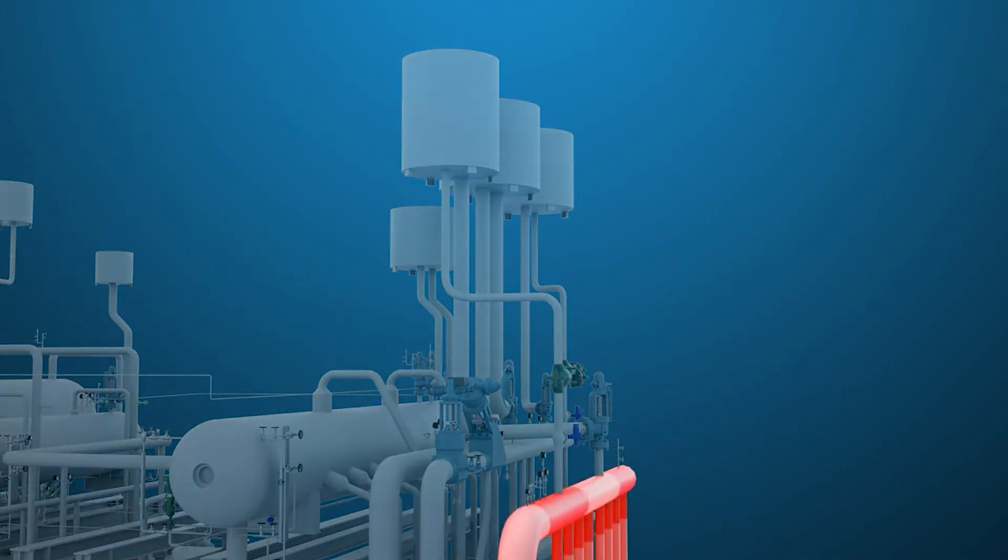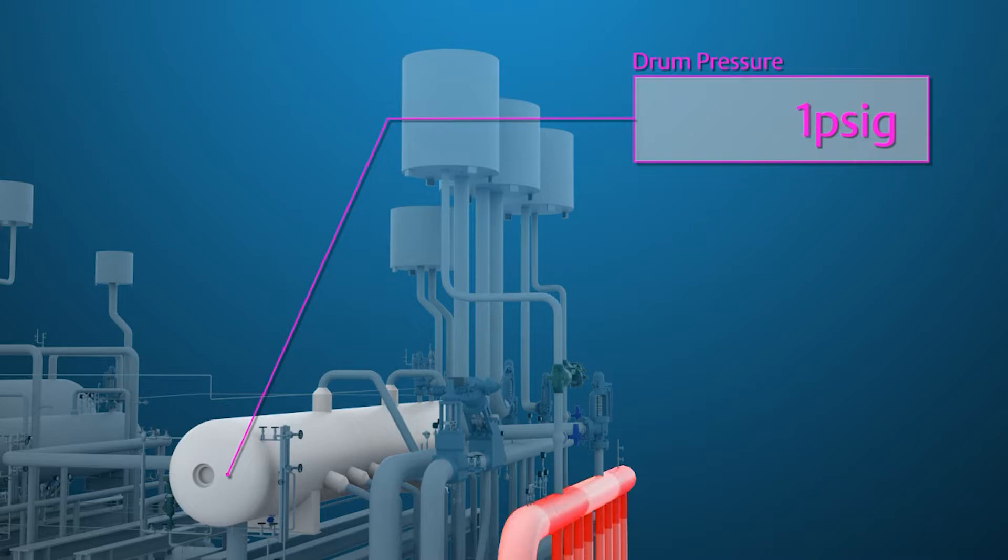At startup, when pressure in the associated steam drum starts to build and the vent valve starts to open, the upstream isolation block valve will open.